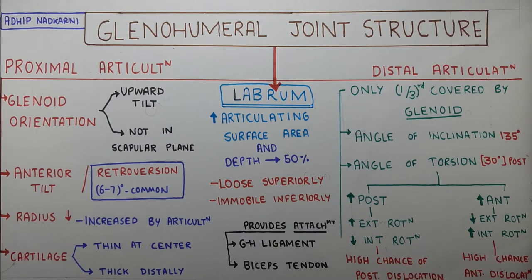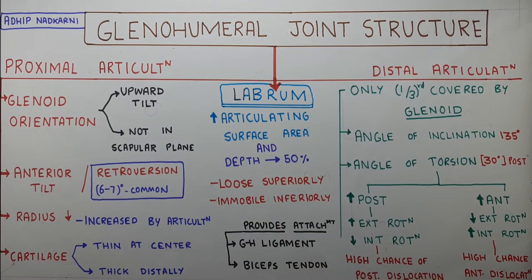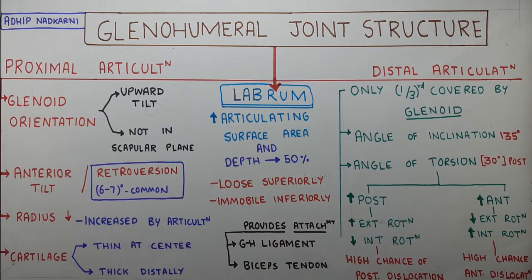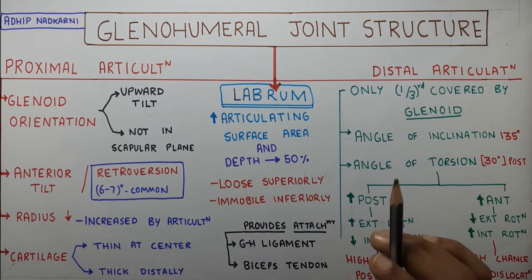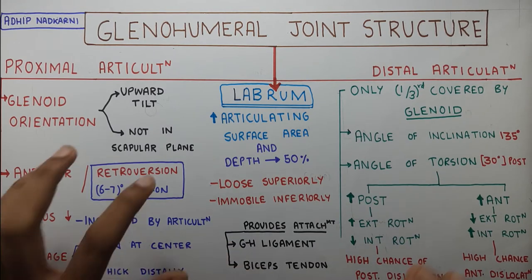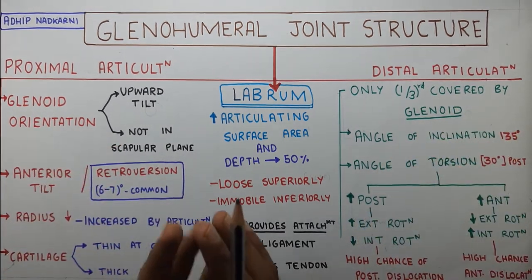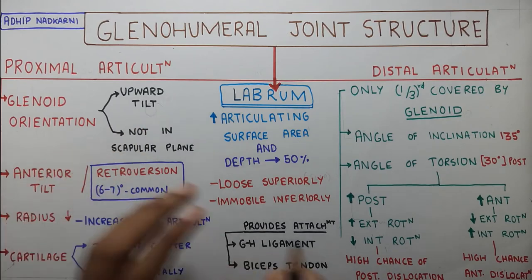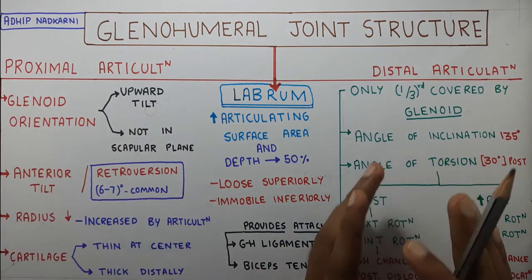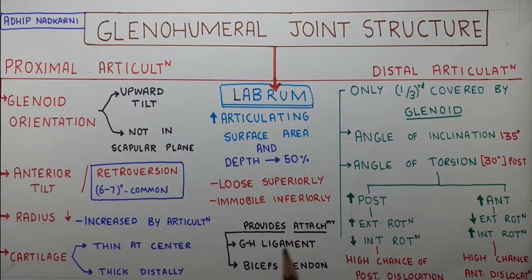In this video we are going to talk about the glenohumeral joint structure. This topic I have divided into two parts. In the second part we will be talking about the ligaments specifically. This part will be dealing with the articulation and the orientation of the glenoid fossa and the humerus, and along with that we will also talk about the labrum.